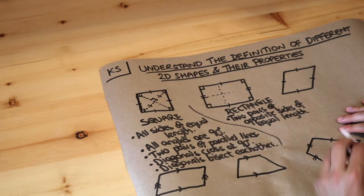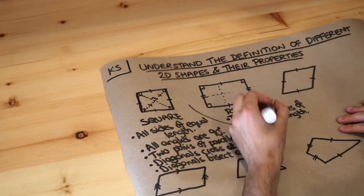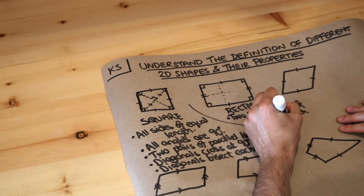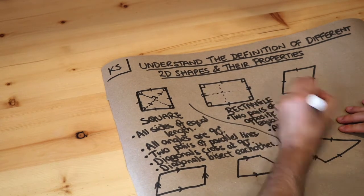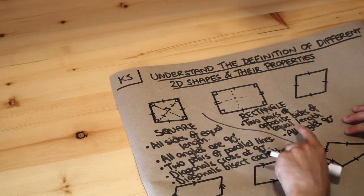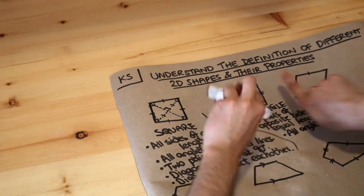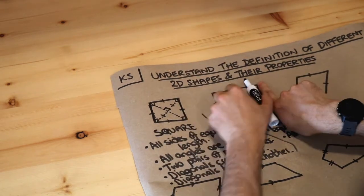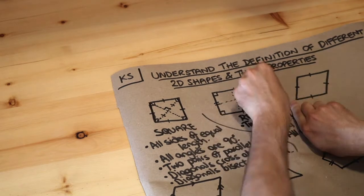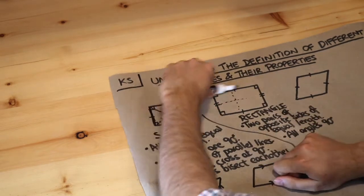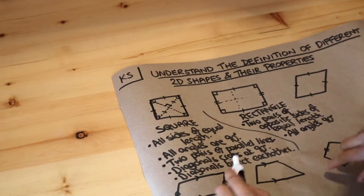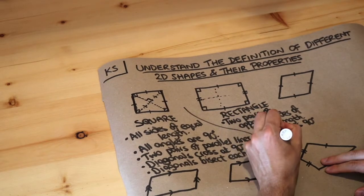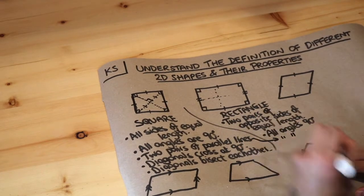A rectangle also has all angles as right angles — all angles are 90 degrees. And like the square, we can see it has two pairs of parallel sides: this side and that side go in the same direction, and that side and that side go in the same direction. So it has two pairs of parallel lines — the details are the same as the square.